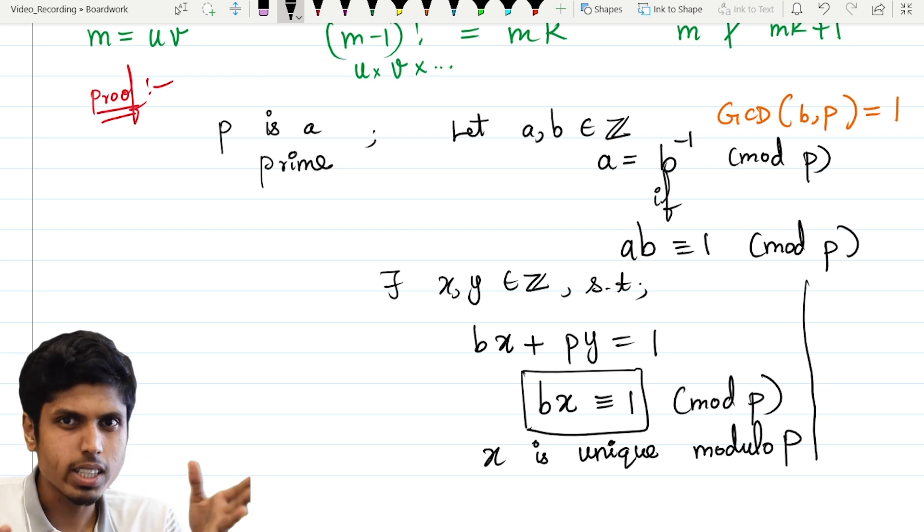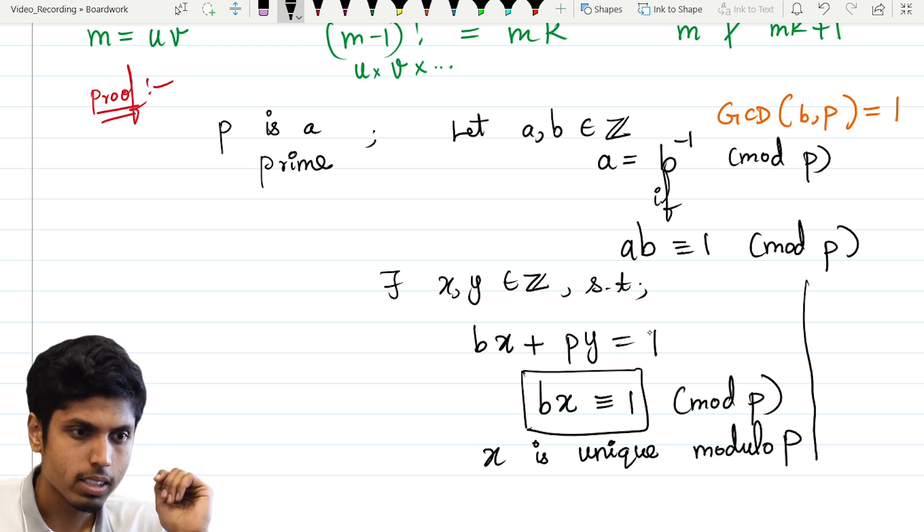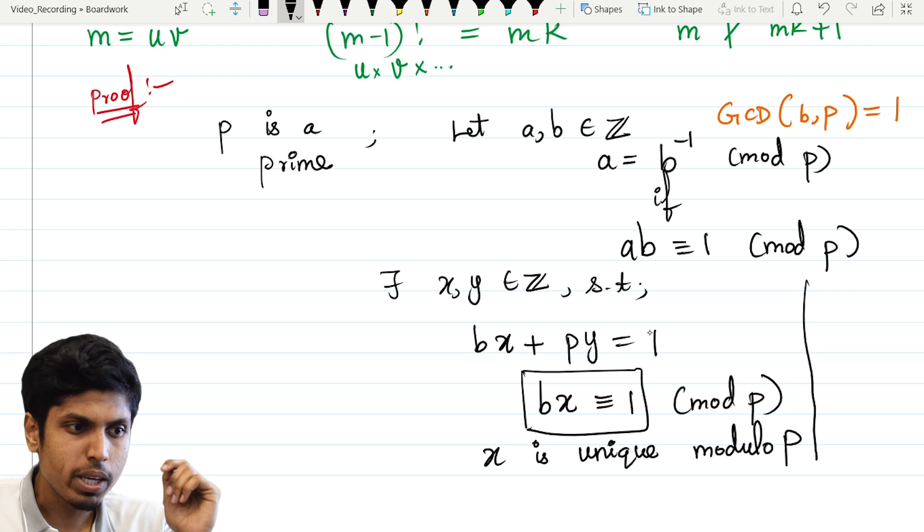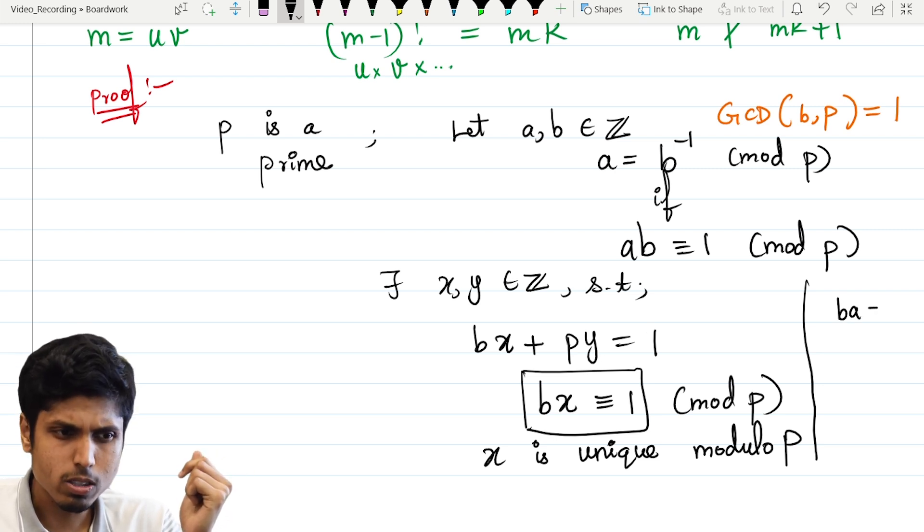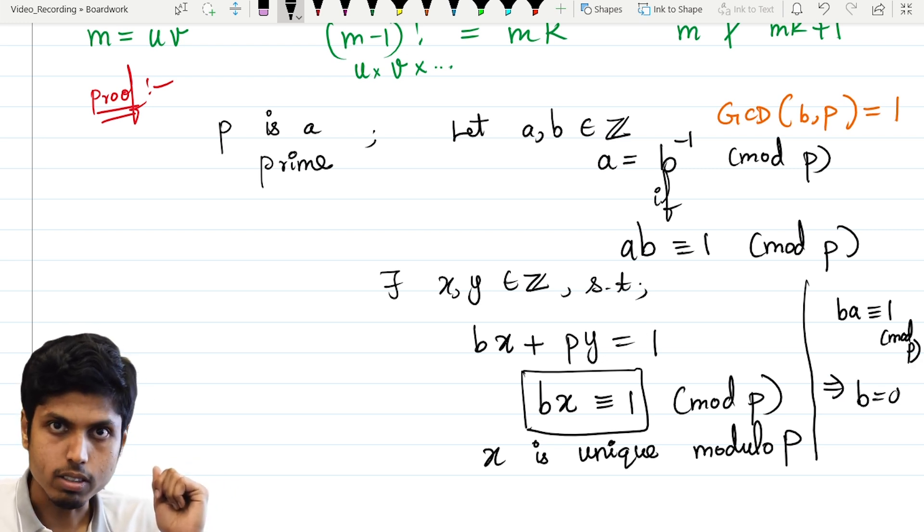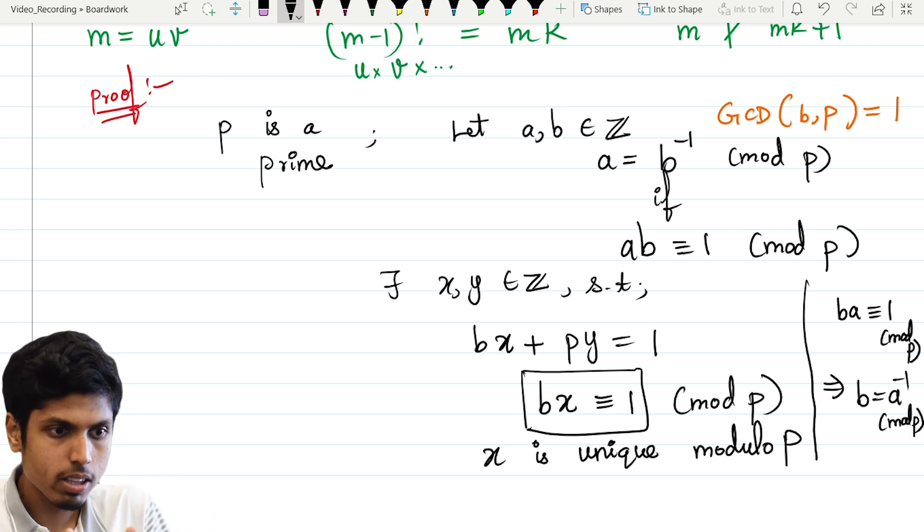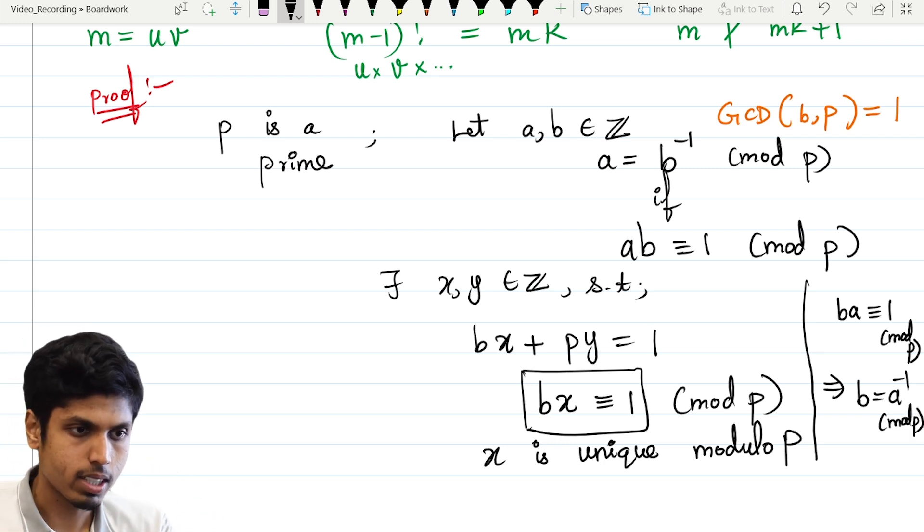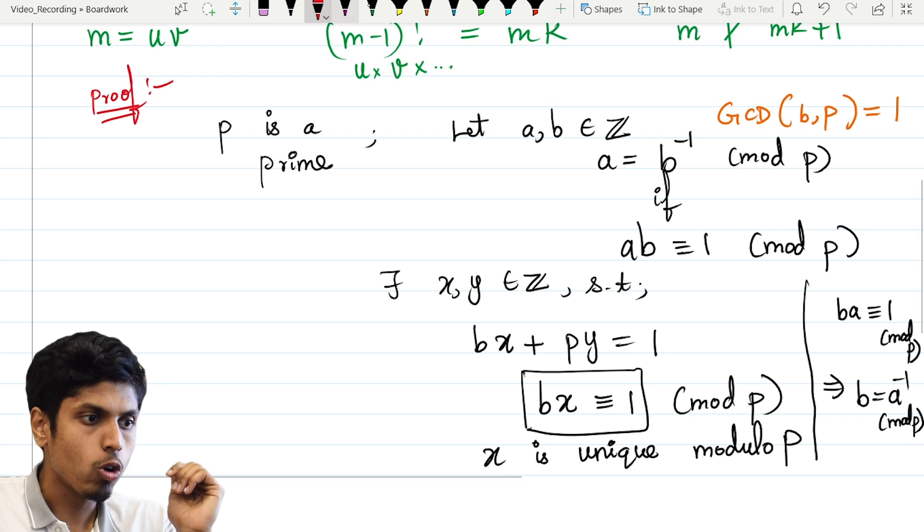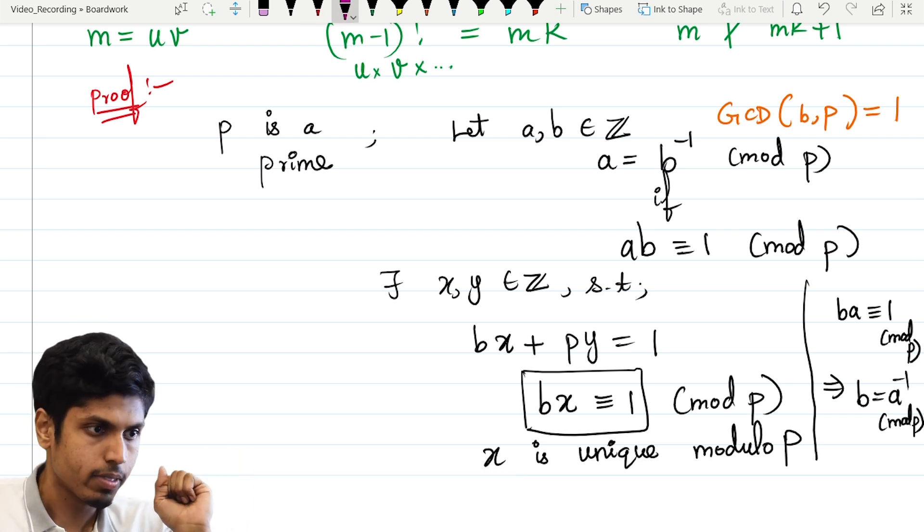And also, inverse of inverse is the same number. That means, if you have b, a into b congruent to 1, then it's clear that b into a is also congruent to 1. Of course, it's the same number, right? Now, this implies b is the a inverse modulo p. Because when b is multiplied with a, it leaves a remainder 1. That's the reason.